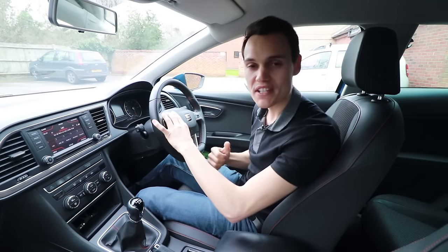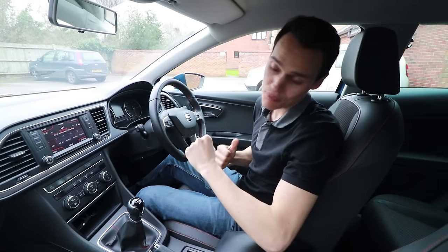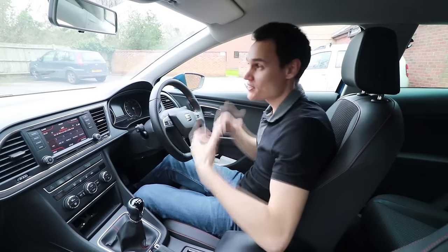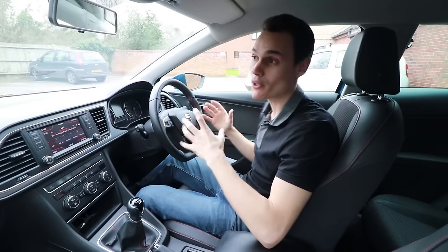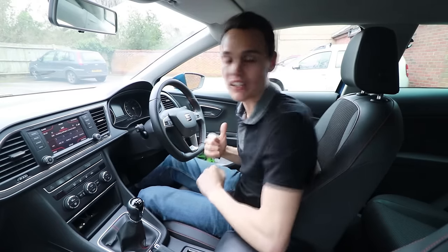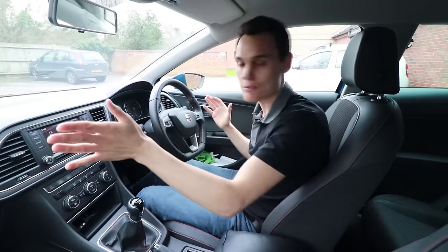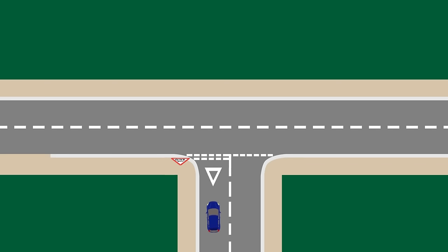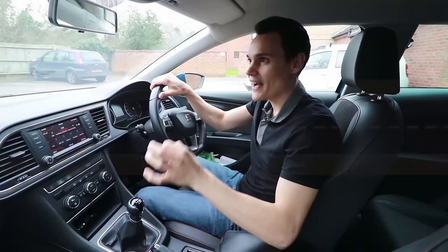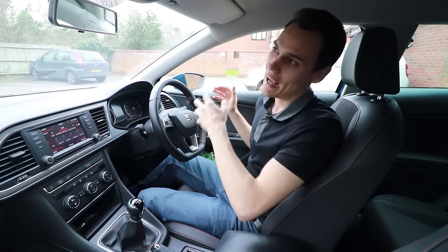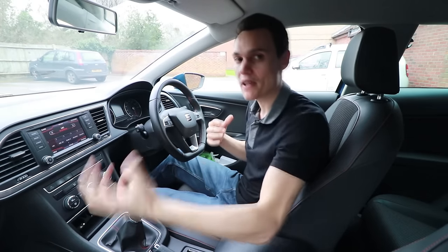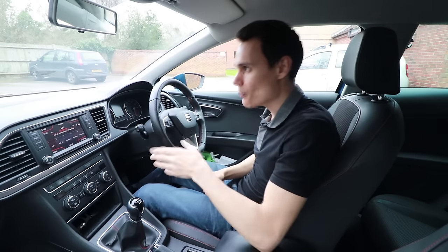As mentioned earlier, how you use the wheel isn't actually normally the cause for the serious driver fault in the steering control category. The third most likely reason people fail the driving test — and get that steering control box marked — is failing to maintain proper positioning when doing a turn. If you've got a difficult left bend and you don't steer enough, ending up going really wide possibly onto the other side of the road, they mark that as steering control.